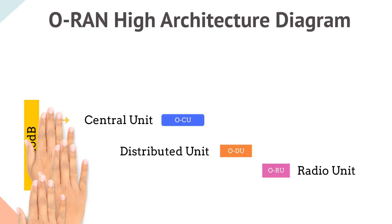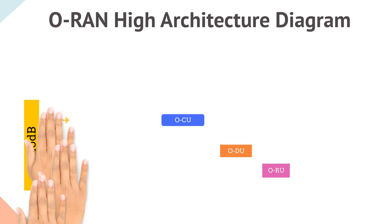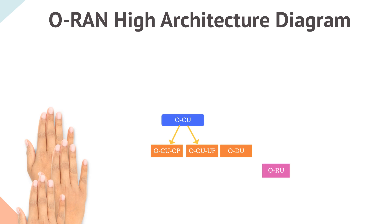central unit, a distributed unit and a radio unit. In ORAN specifications they are called OCU, ODU and ORU. The CU is further split into two logical components: one for the control plane and one for the user plane.